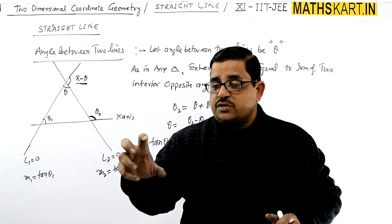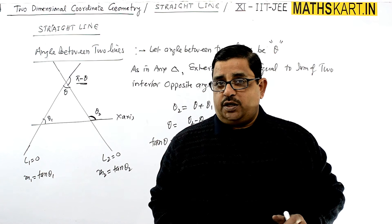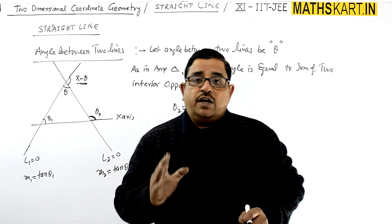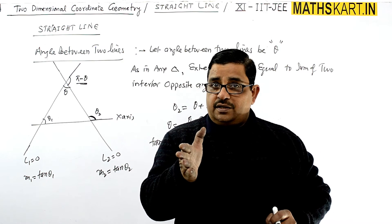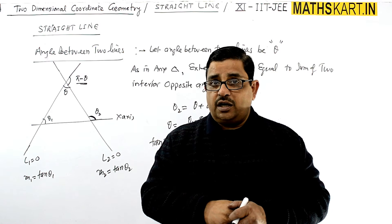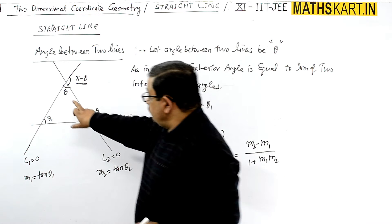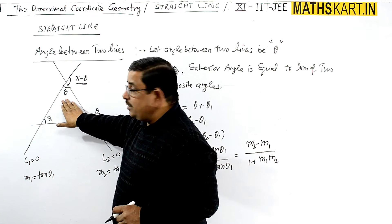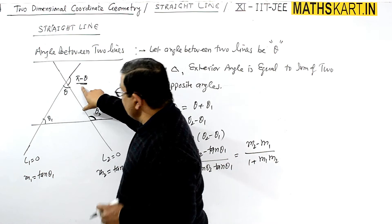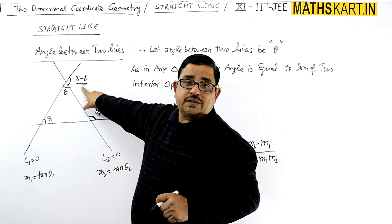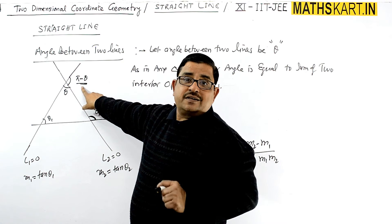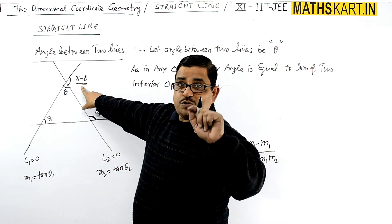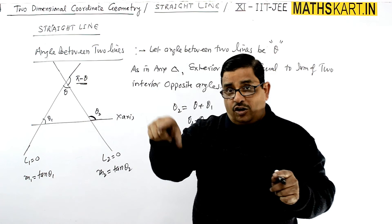When two lines intersect, one angle is acute and the other is obtuse. If the acute angle is θ, the obtuse angle is 180° − θ. For example, if θ = 60°, then 180° − 60° = 120° is the obtuse angle between the same two lines.